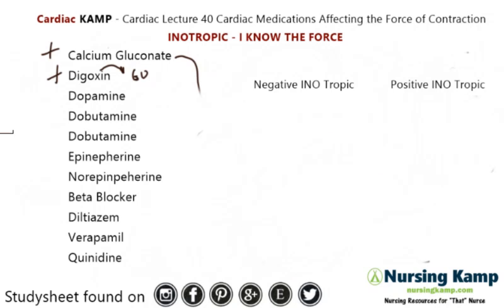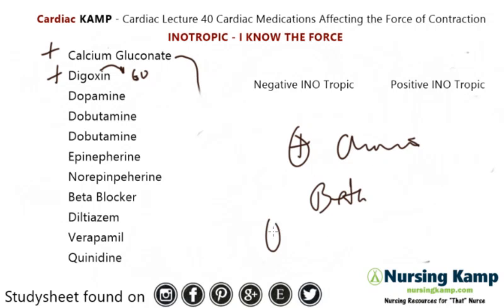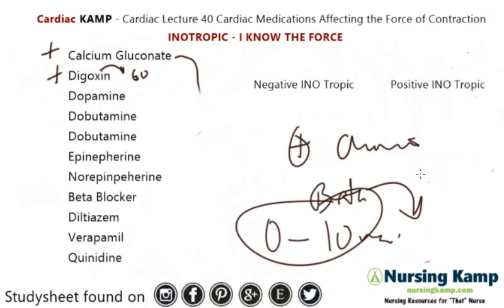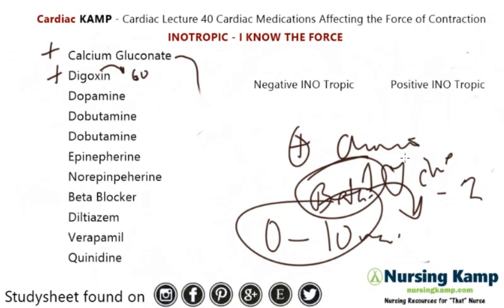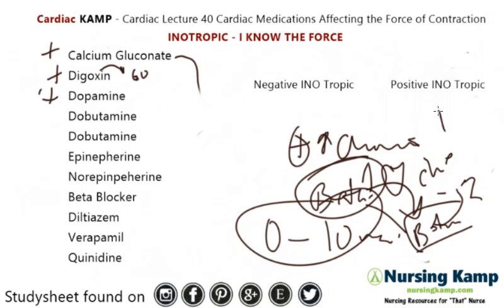The next one is dopamine. Dopamine is a positive chronotropic, and we talked about that because it's a beta. It's beta from 0 to 10 micrograms per minute, and what happens is it increases circulation and stimulates beta-1 — heart — and beta-2 — lungs. What it does is agonize these beta receptor sites, and in turn it's going to increase the heart rate and also increase the force of contraction. So it makes an excellent medication for shock — it's going to increase cardiac output.